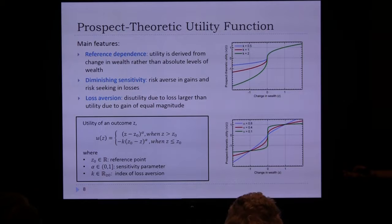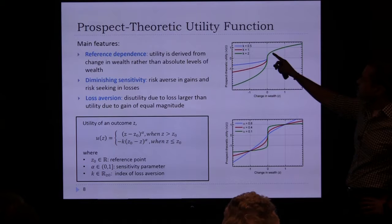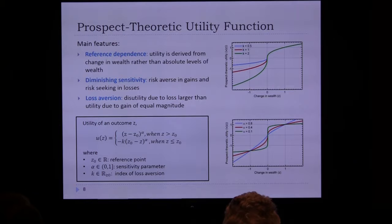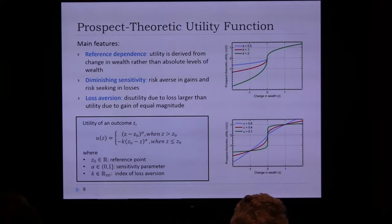The S-shape also captures that people are risk averse in gains (concave region) and risk seeking in losses (convex region). Third, there is loss aversion: winning a dollar might feel like gaining a dollar, but losing a dollar may feel like losing $5 or $10. Losing hurts more than winning feels good.